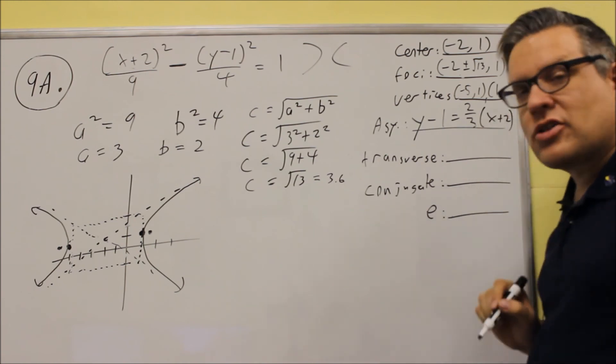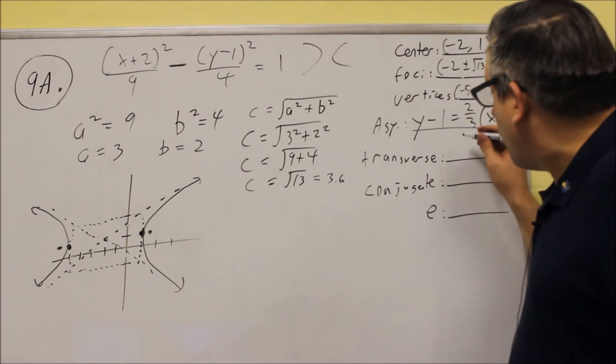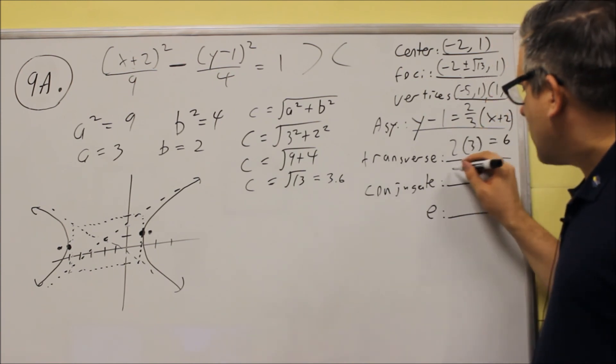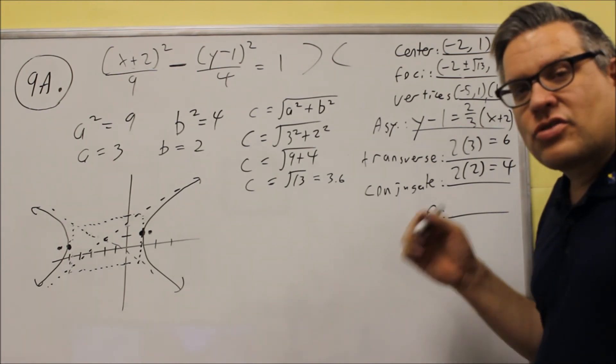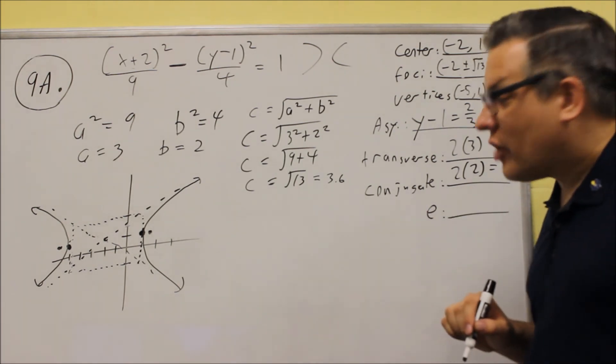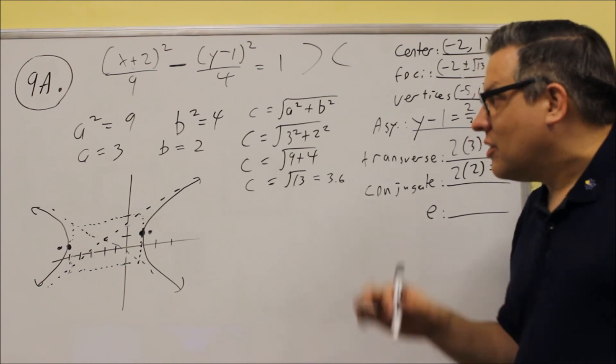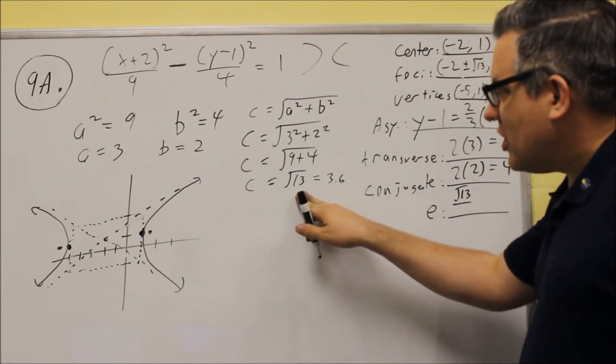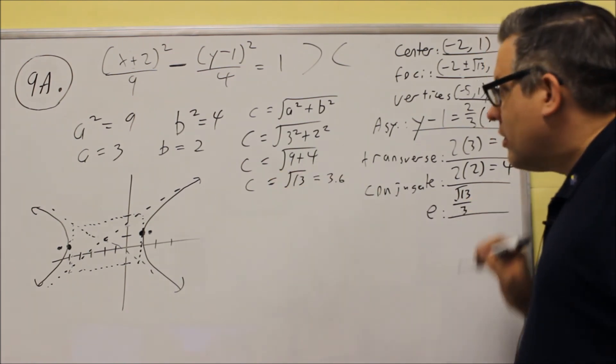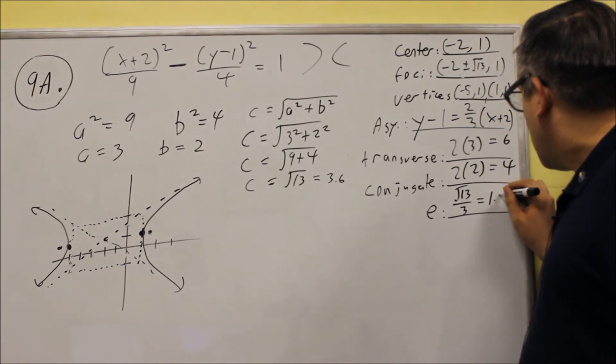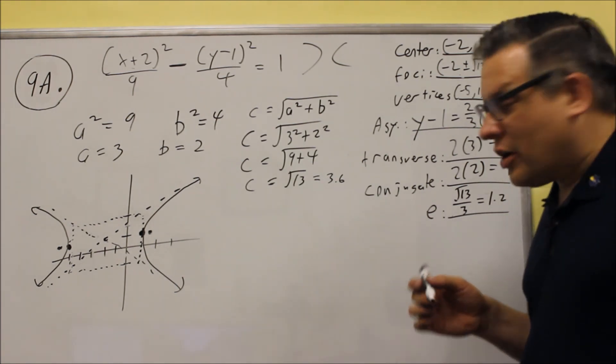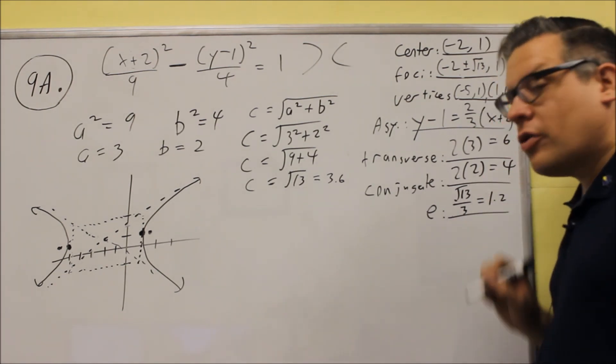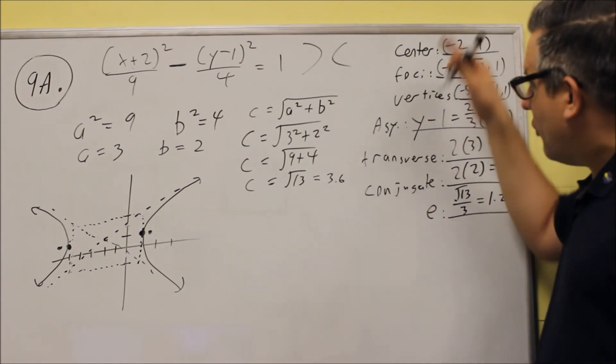The rest of these are just going to use a formula. Transverse axis is 2 times a. 2 times 3 is 6. Conjugate axis is 2 times 2, which is 4. And your eccentricity is always c over a. It's the same formula that you would use for ellipses. Also works for hyperbolas. Eccentricity is square root of 13, which is c value over 3. So c over a. And if you get a decimal equivalent, it's 1.2. And on the test, you don't have to worry about putting both of them. Just put one or the other. I'll take both answers, either the decimal or the exact value. So now the problem's finally done. We've answered everything.